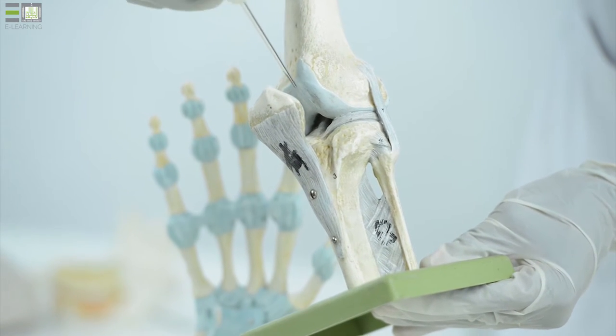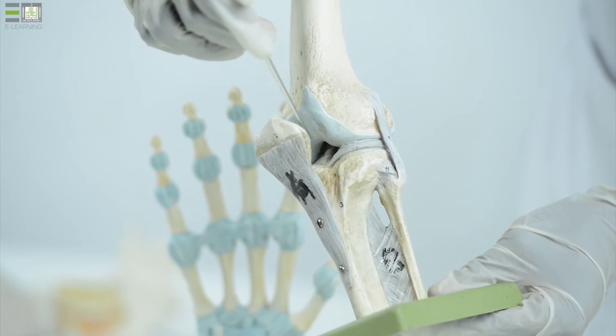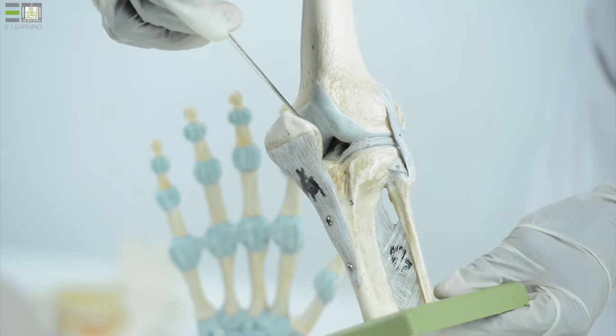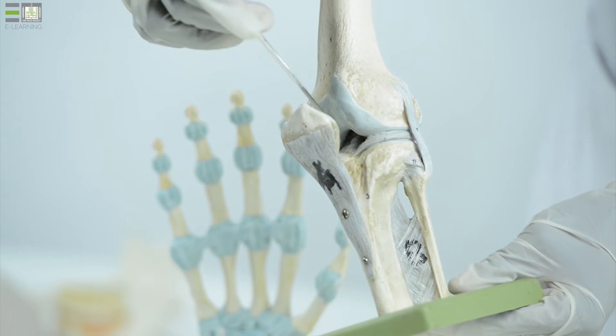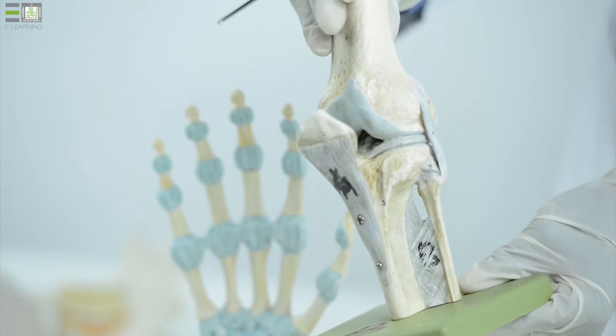The capsule is lined with a membrane called synovial membrane, which secretes fluid that lubricates the space between the adjacent bones.